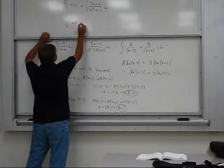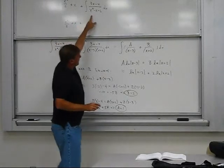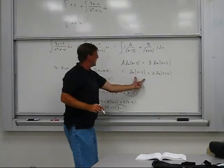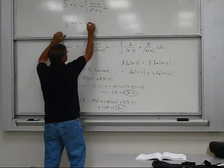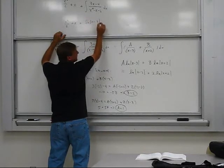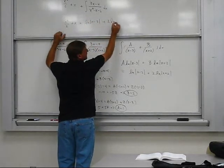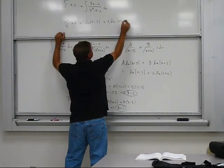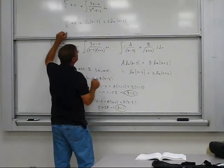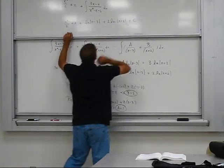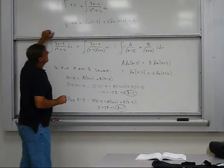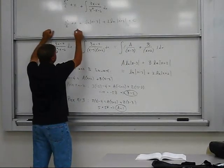So my final answer is going to be x squared over 2 plus x plus the answer that I got from this integral, which is right here, ln of x minus 3 plus 2 ln x plus 2 plus a constant.